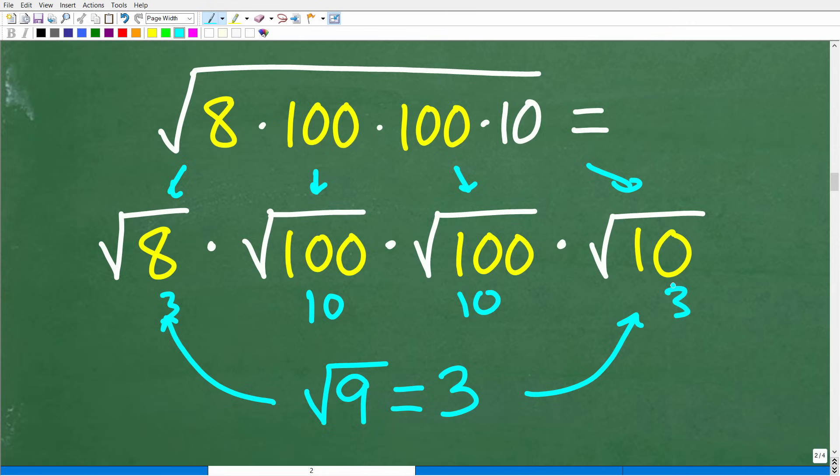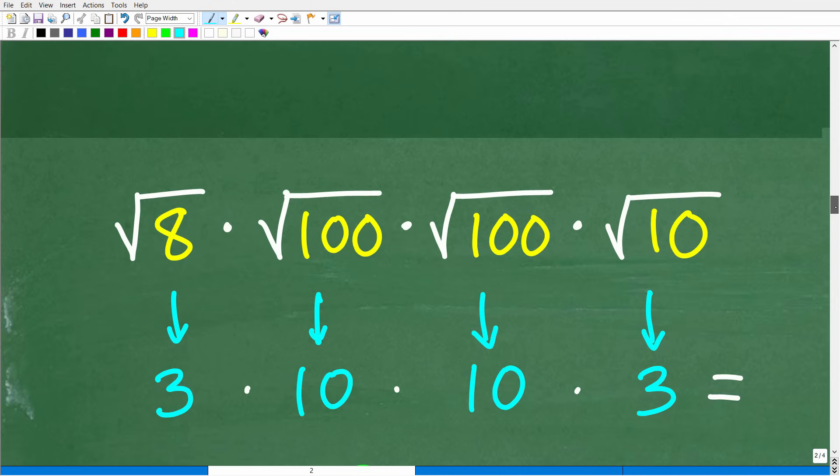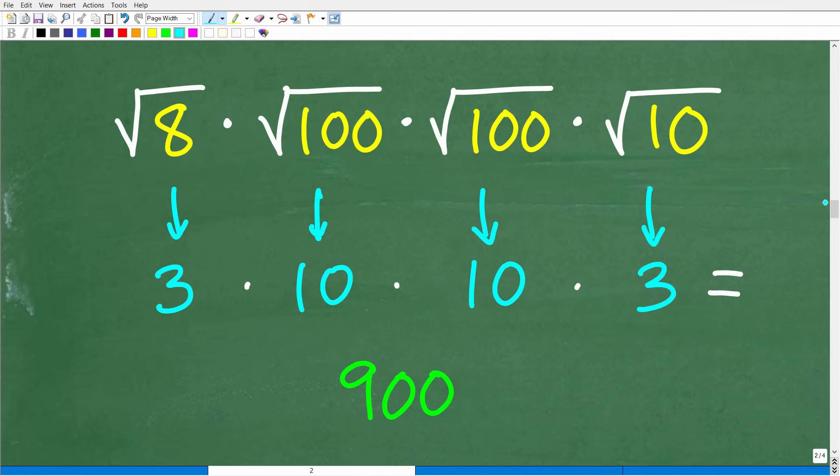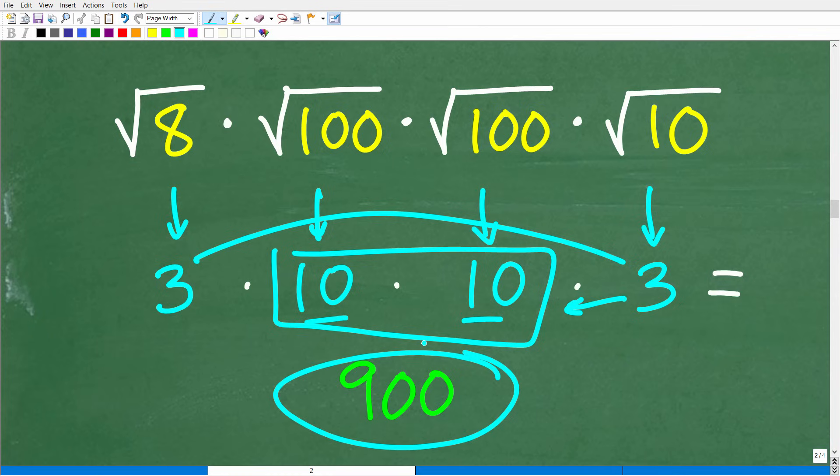Again, the objective here is to estimate. I'm not looking for a perfect answer, I'm looking for a pretty quick estimate. So let's go ahead and do this. And here I'm just going to think, the square root of 8, that's pretty close to the square root of 9, so I'm going to just call that 3. The square root of 100 is 10. The square root of 100 is 10. The square root of 10, I'll just call that 3, although I know it could be a little bit more. And now I'm just going to do this product real quick. So 10 times 10 is 100, and then 3 times 3 is 9. So 9 times 100 is 900.